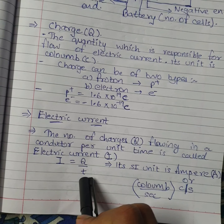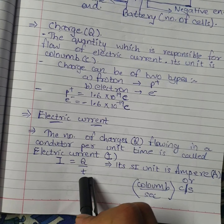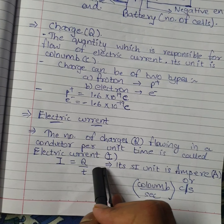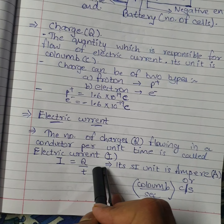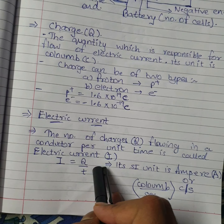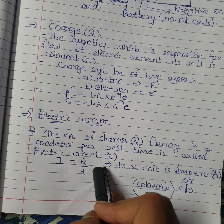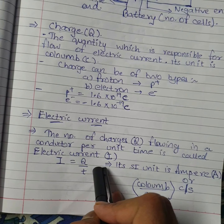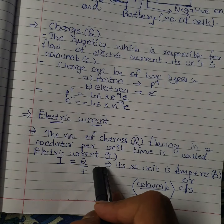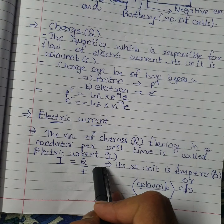The definition most commonly asked in exams: electric current is the number of charges flowing in a conductor per unit time. Charge consists of two types — proton and electron. Each has its own value: proton is +1.6 × 10⁻¹⁹ coulomb and electron is −1.6 × 10⁻¹⁹ coulomb.